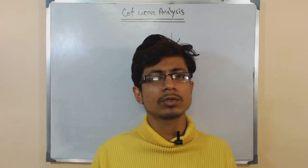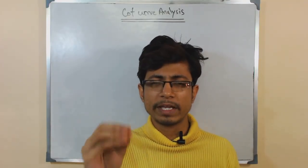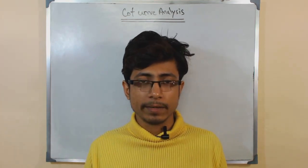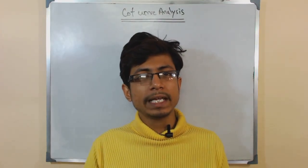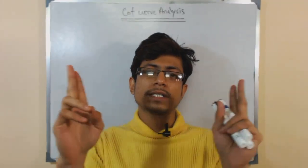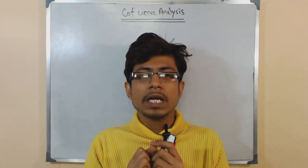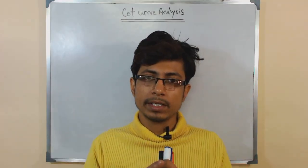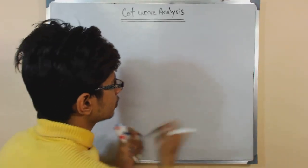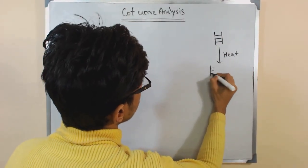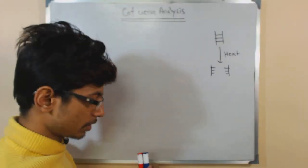Cot curve analysis is the analysis of renaturation of DNA. DNA is a double-stranded structure, and those two strands are combined together with hydrogen bonds. When we apply heat to a solution containing DNA, those two strands separate.